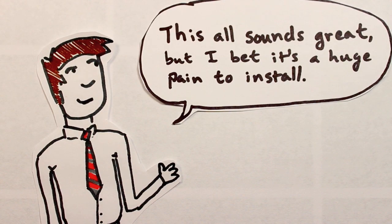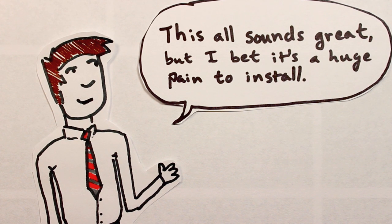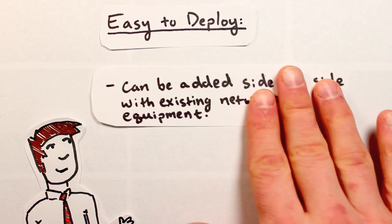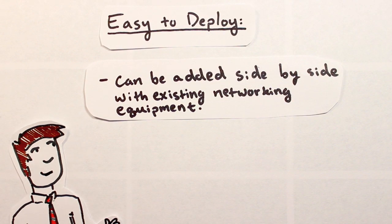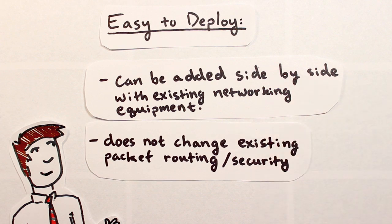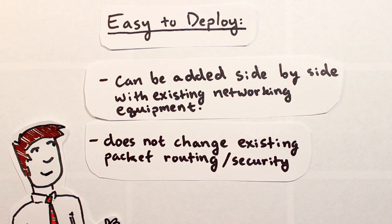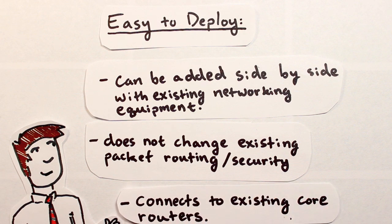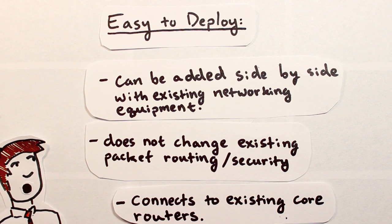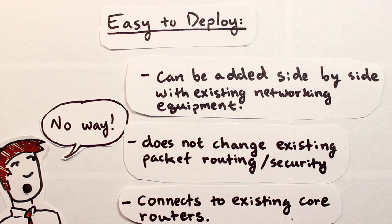Of course, upgrading to a brand new technology sounds great, but it can also be a little scary, too. Fortunately, upgrading to GPON does not require a massive overhaul of your current network. It can be added side-by-side with existing networking equipment without changing existing packet routing or security, and it connects to existing core routers so you can upgrade to GPON as you replace, consolidate, or expand your current data network.